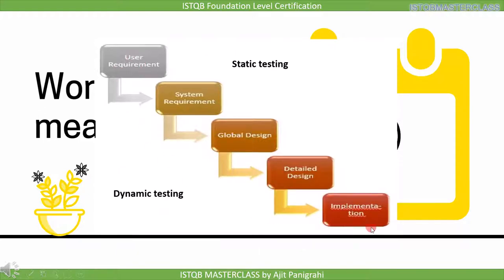These are the steps followed during development of software in an organization. First step is to get user requirements, then we develop system requirements, then comes the global design, next is detailed design, and the last step is implementation where software is developed. So when we say work product, in the system requirement stage the output is system requirement, so system requirement becomes our work product. Similarly, in the global design and detail design stage, the output is a design document, so our work product will be the design document. And in the implementation stage, the output is code or software, so the work product will be code. Work product means output.